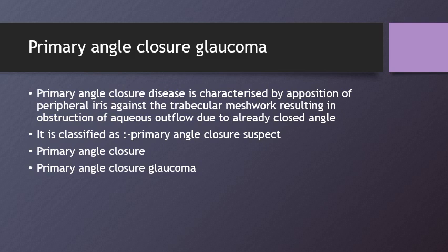If the cause is due to the anatomically predisposed eye, then the cause is primary. If it is due to any other ocular or systemic factor, then the cause is secondary. This classification of primary angle closure disease is given by the International Glaucoma Societies.